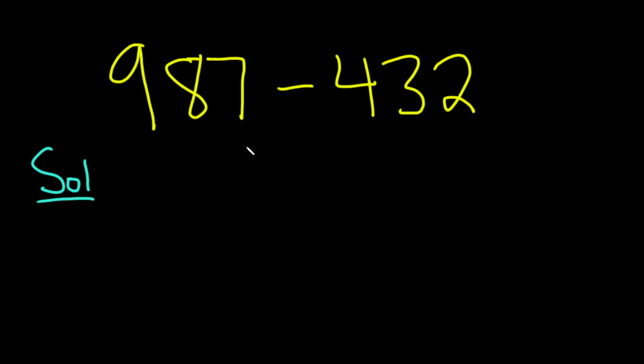So we'll start by writing down the 987 because that's written first. So you have to write that first. And then right below it you line up the digits.